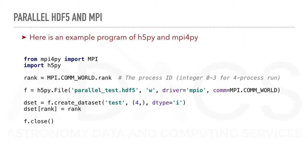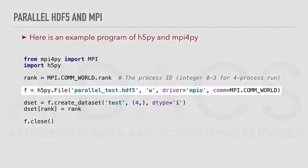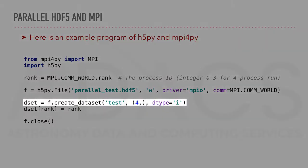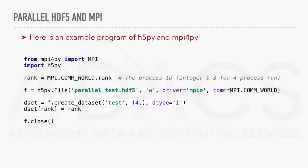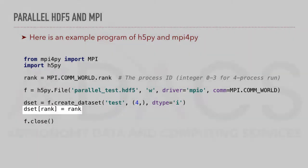Here is an example program of H5Py and MPI for Py. First, from the MPI comm world, we collect the rank, which is the process ID — an integer between 0 and 3 for a 4-process run. We then create an HDF5 file, opening with the driver MPI-IO and specifying the communication world. Then we create a dataset, which will be an array of 4 integers, and store the rank at its position in that dataset.